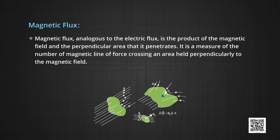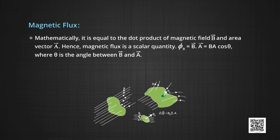To understand Faraday's experiments mathematically, let us first understand the term magnetic flux. Magnetic flux, just like electric flux, is the number of magnetic lines of force crossing a given area held perpendicularly to the magnetic field B. Mathematically, it is equal to the dot product of B and A. Hence, magnetic flux is a scalar quantity. Phi_B = B⃗ · A⃗ = B A cos θ, where θ is the angle between magnetic field B and area vector A.